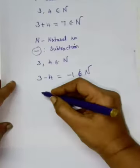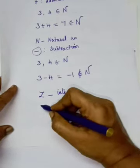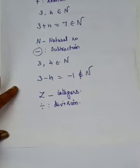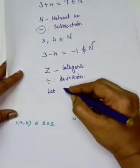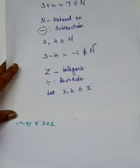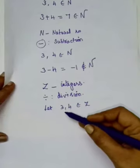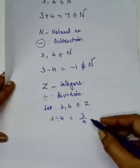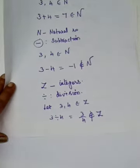Now take N with subtraction. Taking the example 3 and 4 from N, I apply the operation: 3 minus 4 equals minus 1. Minus 1 does not belong to the natural numbers. So the conclusion is that subtraction is not a binary operation on the natural numbers. For the set of integers Z, consider the operation division. Take 3 comma 4 belonging to Z. Then 3 divided by 4 is 3 by 4, which does not belong to the integers. Therefore, division is not a binary operation on Z.